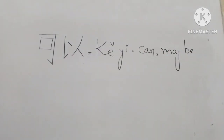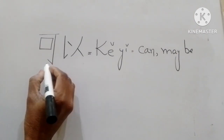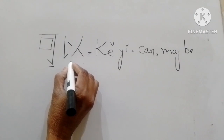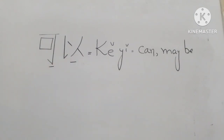Now we come to writing — how this character is written with its stroke names and stroke order. It consists of two parts: Kh-e-e.